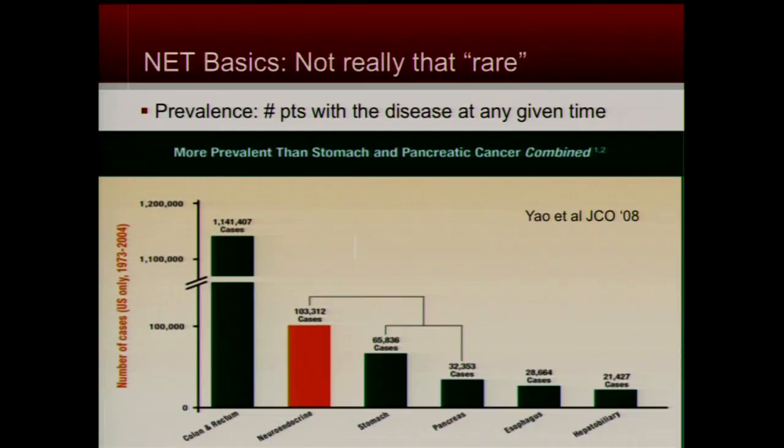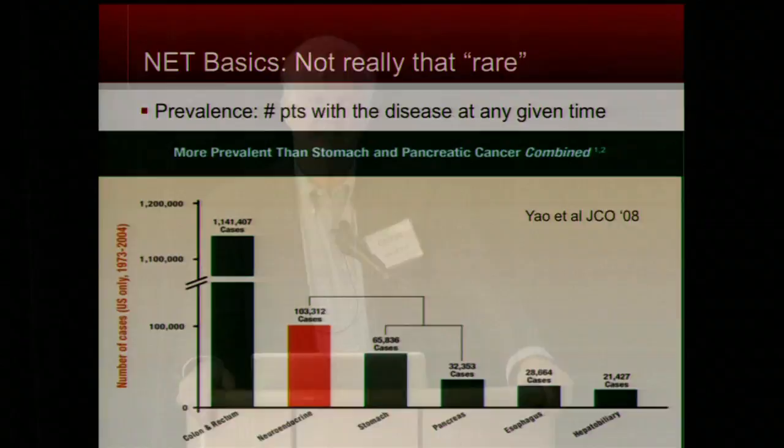If I just look at GI cancers, colorectal cancer is the most common, but neuroendocrine is the second most common. In fact, it's more common in the population than stomach and pancreas combined. Why is that? The answer is quite simple: people with stomach cancer and pancreas cancer don't survive very long statistically, whereas people with neuroendocrine tumors can survive a long time. If you have a disease that allows you to survive decades, there are going to be more people with that disease that accumulate — that's why it's not as rare as people give it credit for.